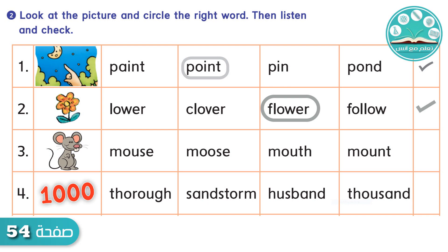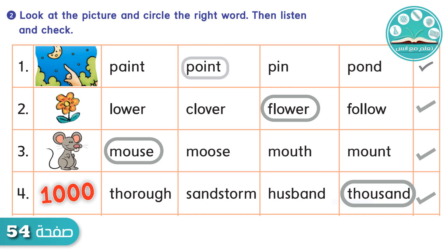Number 2: Flower, flower. Did you circle flower? F-L-O-W-E-R. Number 3: Mouse, mouse. Did you circle mouse? M-O-U-S-E. Number 4: Thousand, thousand. Did you circle thousand? T-H-O-U-S-A-N-D.